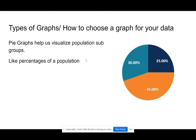What types of graphs do we have? First, we have pie charts or pie graphs. These help us visualize how a population breaks down into subgroups — we have 100% of the population, and then it's broken down into smaller parts.